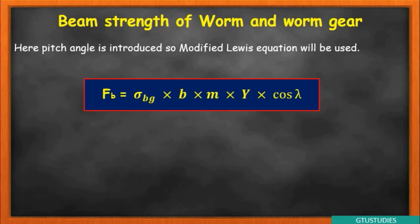Here σbg is the bending stress, b is the face width, m is the module, y is the Lewis form factor, and cos λ is the lead angle term. In previous chapters only σb was used for pinion and gear. Here λ is the lead angle as defined earlier. All terms have been defined for you. y (Lewis form factor) needs to be found, and if the equation is not memorized, it can be found from the data book as explained earlier.